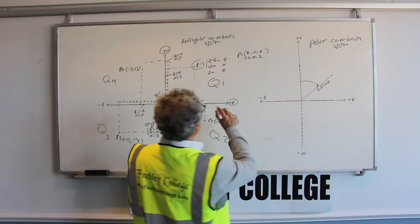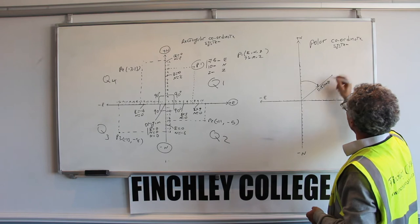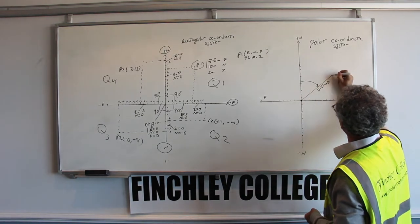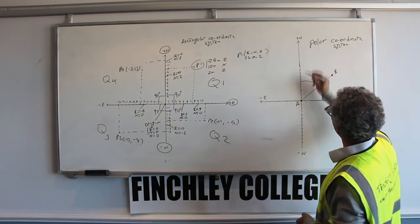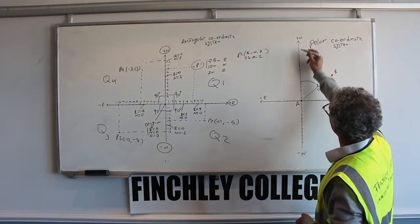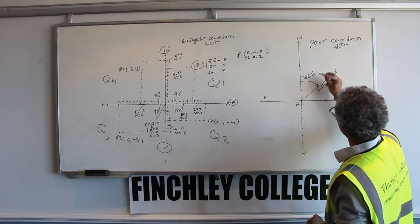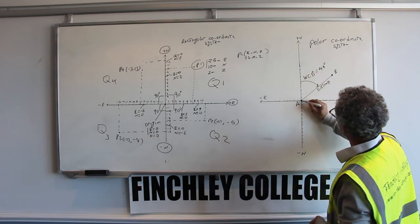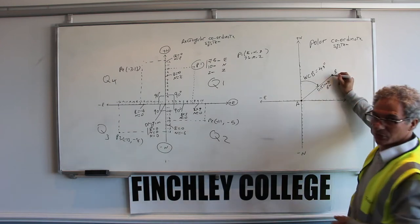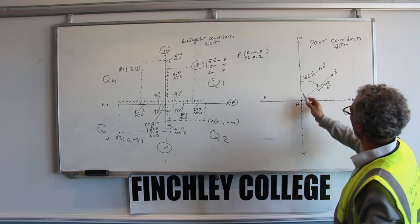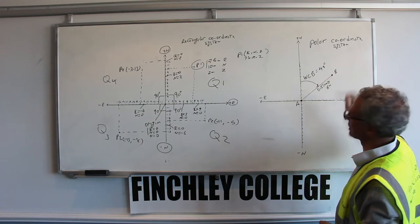You can also identify points on site using the polar system. In the polar system, we draw a line from one point to another — for example, point A to point B. If we calculate the angle between the north axis and this line, we call this the whole circle bearing, say 40 degrees. And if we know the distance from A to B, say 6 meters, we can calculate the position of B.